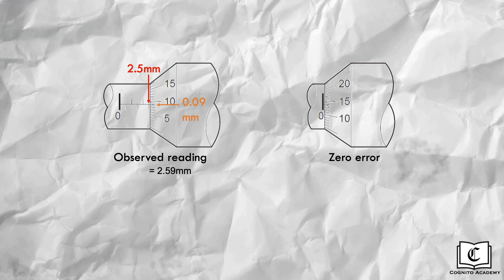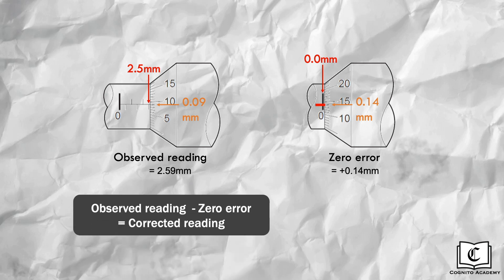Now, let's read the zero error. First, we identify the type of zero error. Since the zero marking on the timbre scale is below that of the red datum line, this is a positive zero error. The main scale gives 0.0 mm, while the timbre scale gives 0.14 mm. Adding both gives a zero error of positive 0.14 mm. Lastly, we account for the zero error by subtracting it from the observed reading, giving us an accurate corrected reading of 2.45 mm.